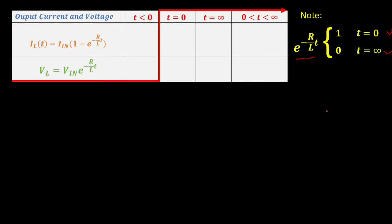Let's populate the table. At time less than 0, both current and voltage equal 0. At time equal to 0, the current is 0 — which makes sense because the inductor does not allow abrupt change in current with a step input. At time equal to infinity, the current reaches its maximum value, because the inductor acts like a short and only the resistor controls the current. For time between 0 and infinity, we use our formula. For voltage: at time equal to 0, the inductor voltage equals the input voltage; at time equal to infinity, it decays to 0; in between, it follows the formula.